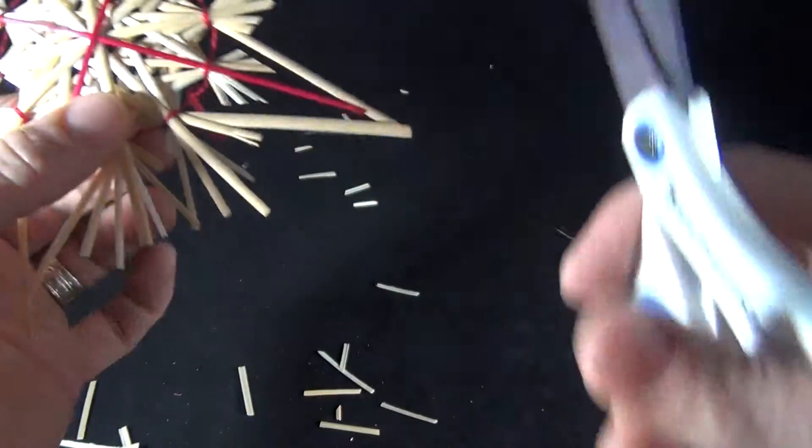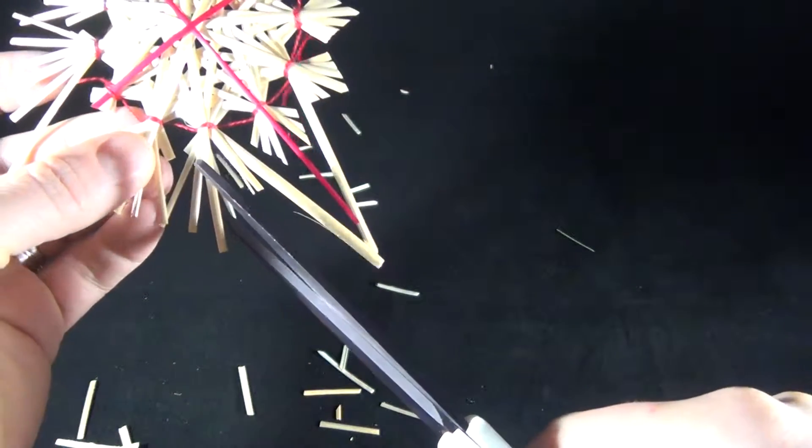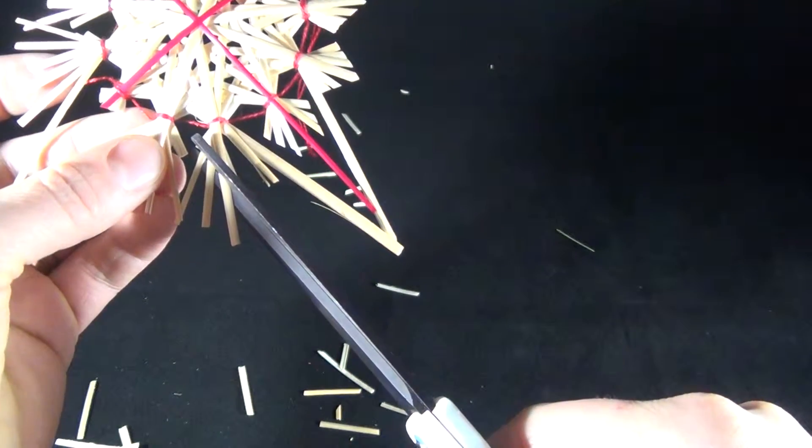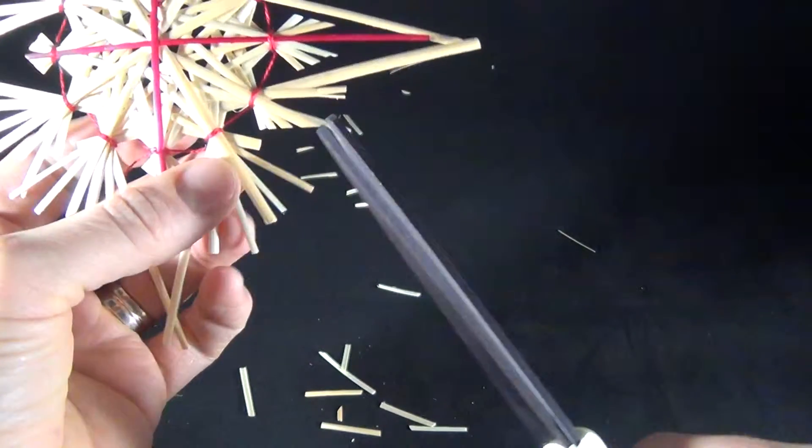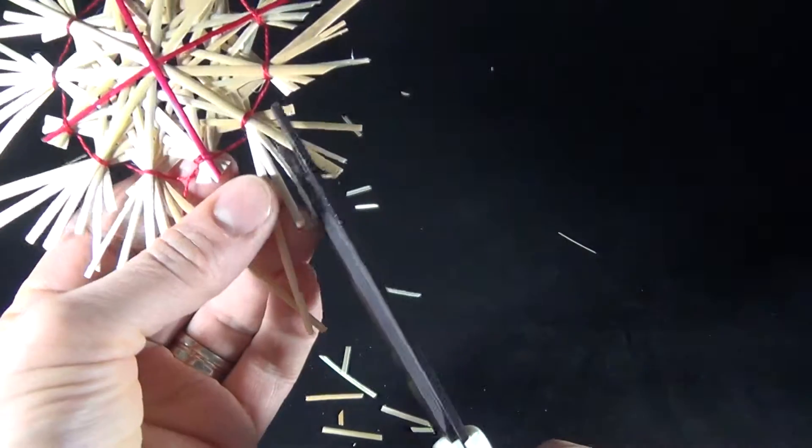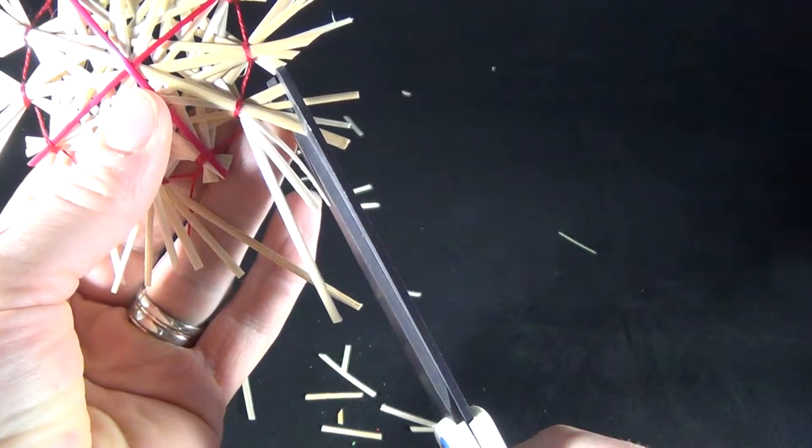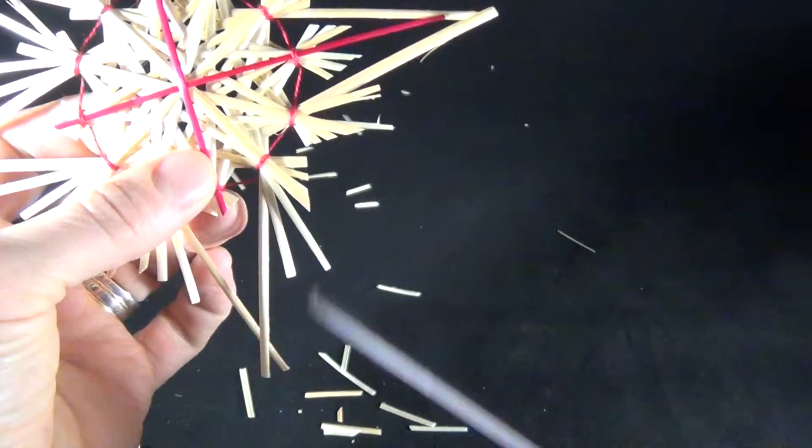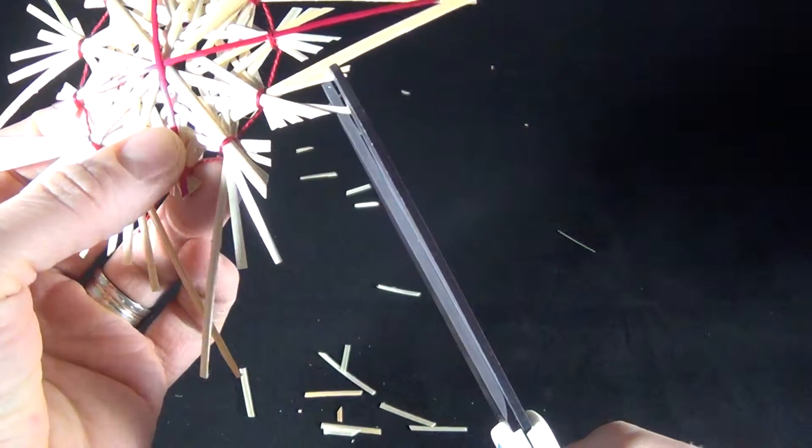Now let's do these two. We're going to start by cutting towards the center first, towards the center away from the big Star of Bethlehem.